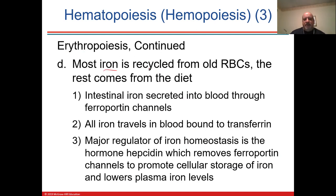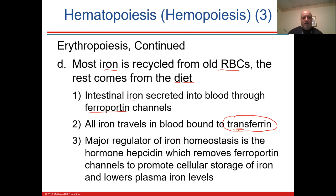The iron is recycled from red blood cells, but there is also a daily recommended allowance of iron in your diet. Iron is secreted into blood through ferroportin channels, and transferrin is the carrier protein for iron. It's put together and broken down in the liver. A hormone called hepcidin removes the ferroportin and promotes cellular storage of iron in the liver.